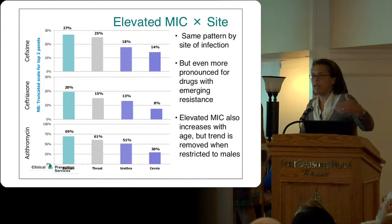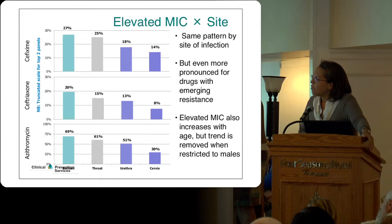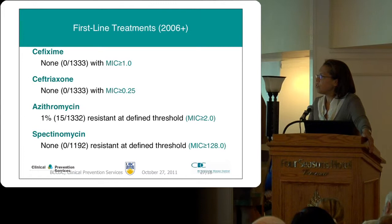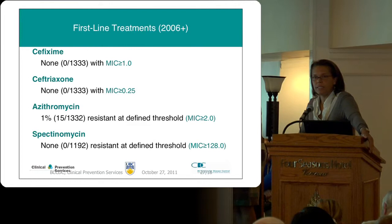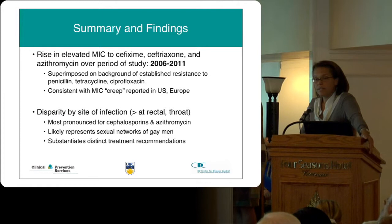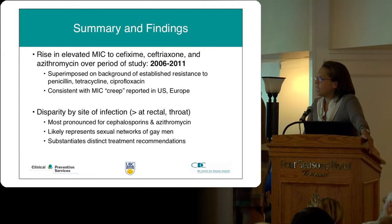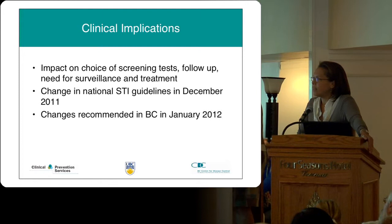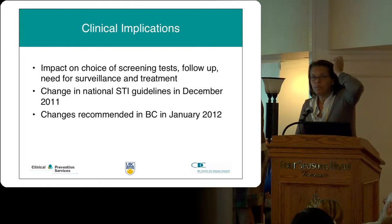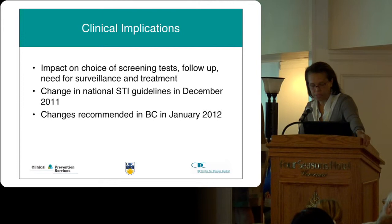I'm sharing all this because it helps explain why the treatment recommendations are what they are. In British Columbia we've moved from not seeing issues with our MICs to now seeing these trends. The big message is: there is a rise in the MICs for ceftriaxone and azithromycin over time, and there's a disparity by site. This led to changes in the national STI guidelines in December 2011, and we made those changes in British Columbia in January 2012.